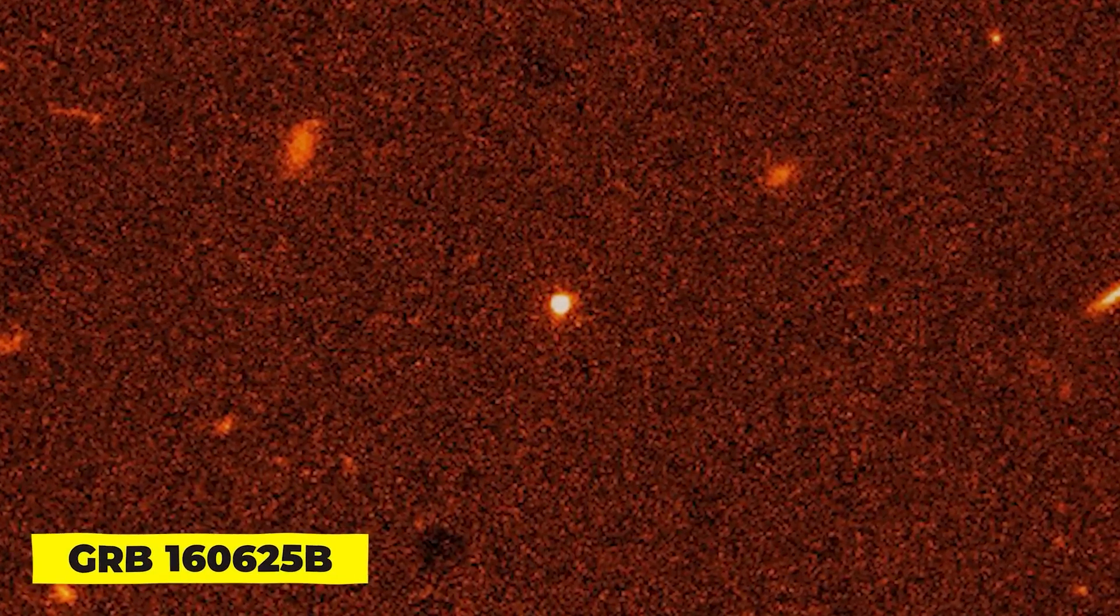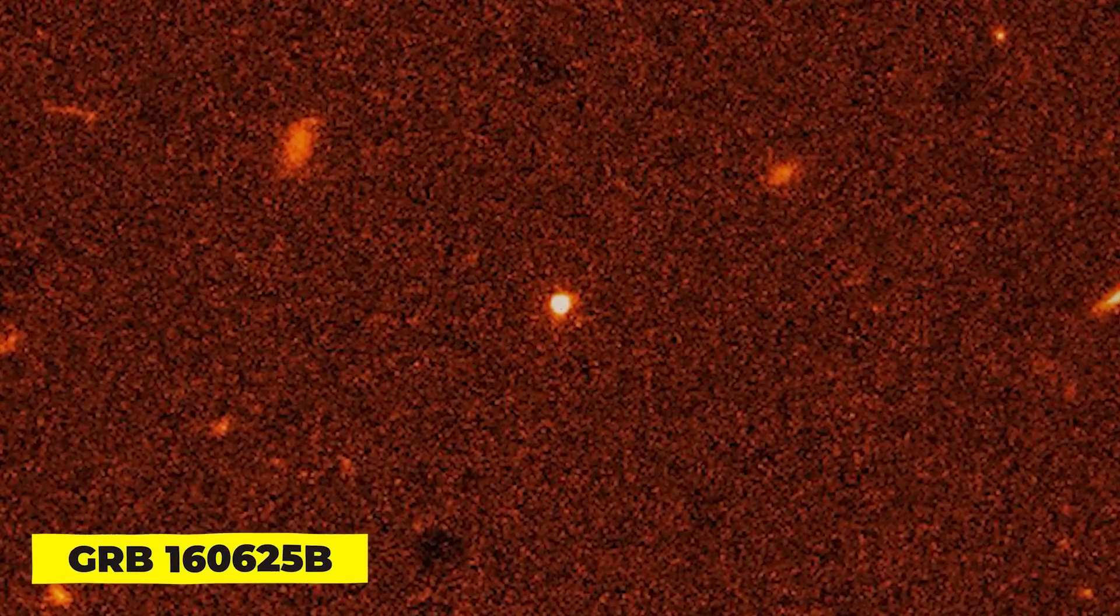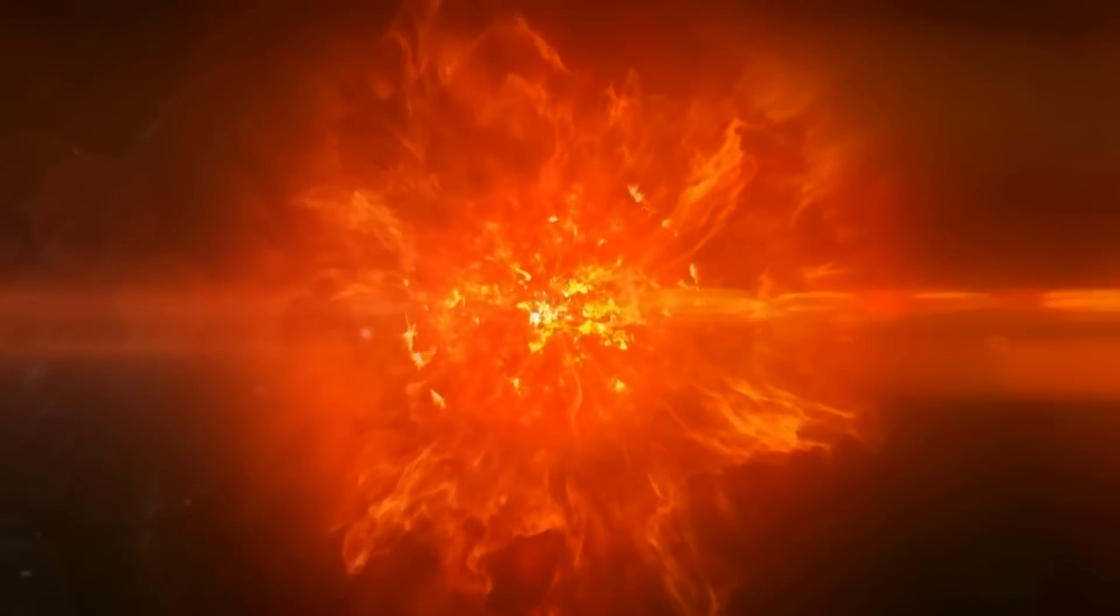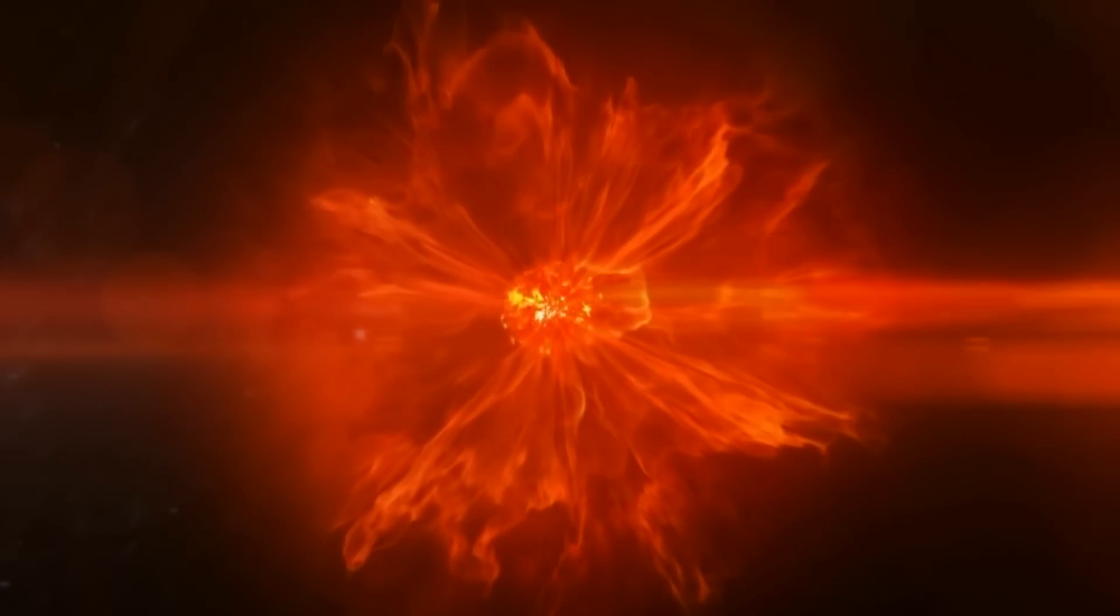The event known as GRB160625B occurred on June 25th, 2016, and the first ever detection of it may help us understand how gamma ray bursts are even able to exist.